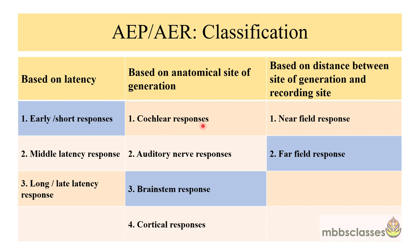The first is the cochlear response, which includes cochlear microphonics and summating potentials. Next comes the auditory nerve responses — the example is electrocochleography. The third, arising from the brainstem, is the brainstem response, and the fourth one is responses originating from the cortex.